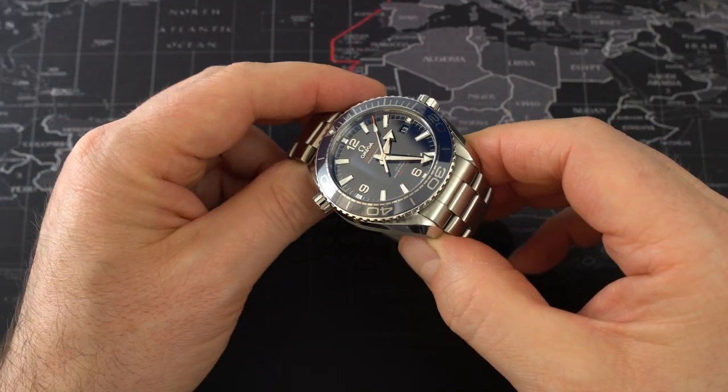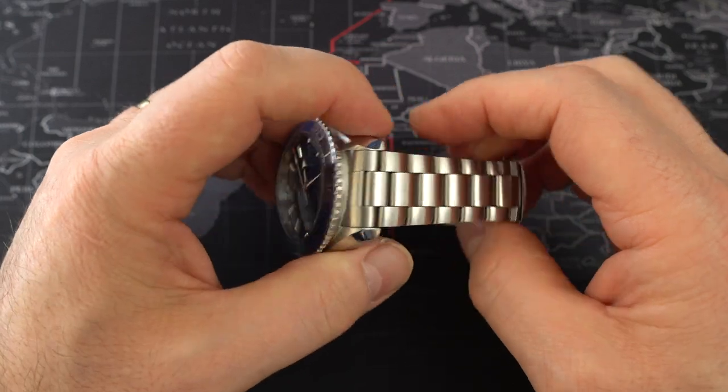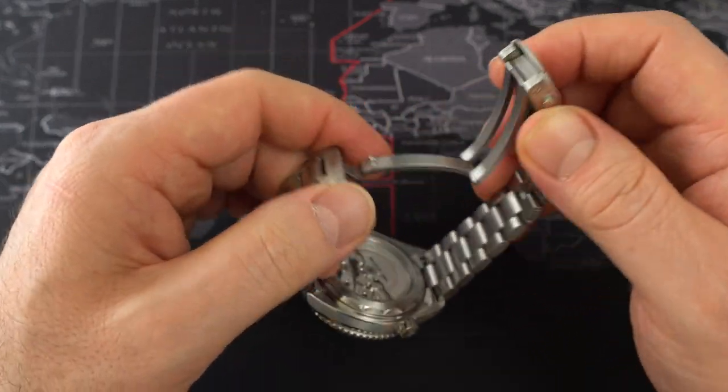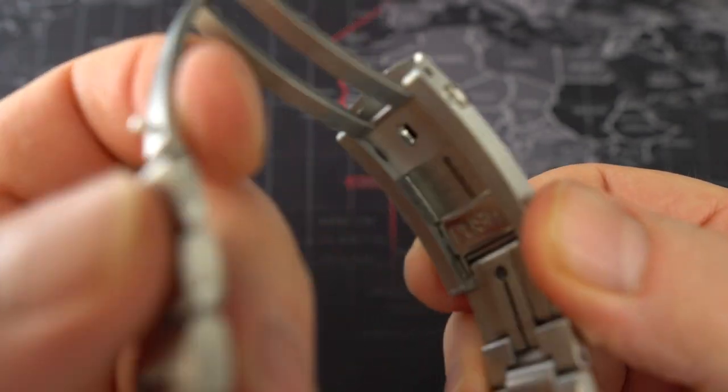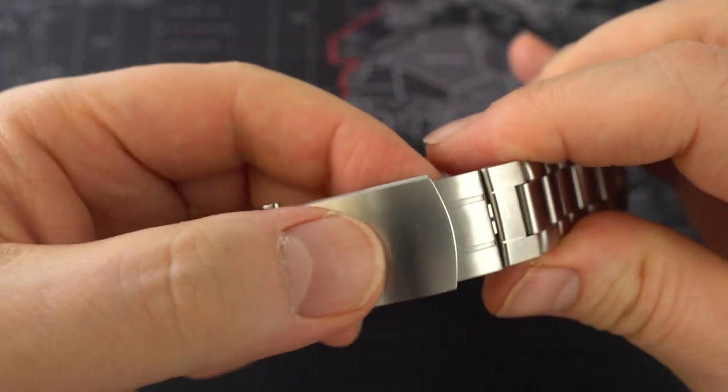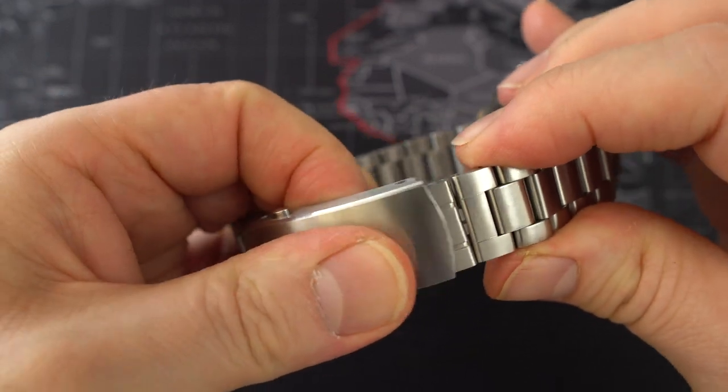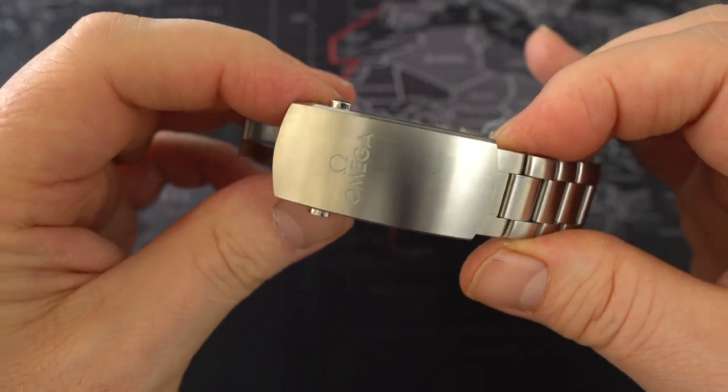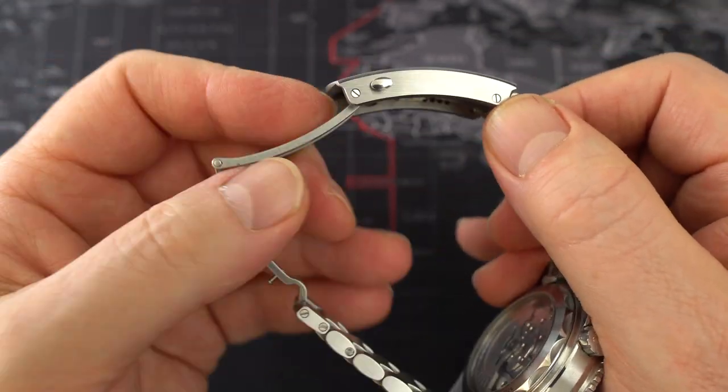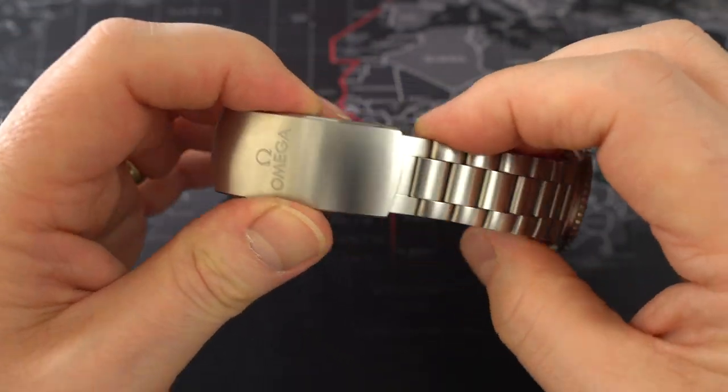Now before we get started let's point out the obvious ways to adjust your bracelet. Modern Omegas, certainly the Seamaster range, come with this quite handy push button adjuster that adjusts it by about 9mm. You just depress the button underneath and it slides in and out. Now I find this much easier than the Rolex Glidelock, although the clasp is a bit chunkier so maybe the Rolex has a more compact design.